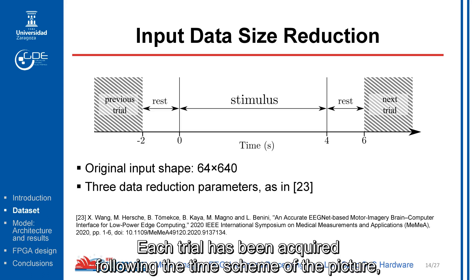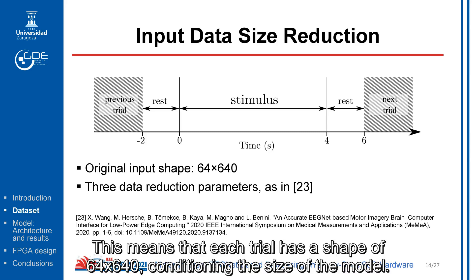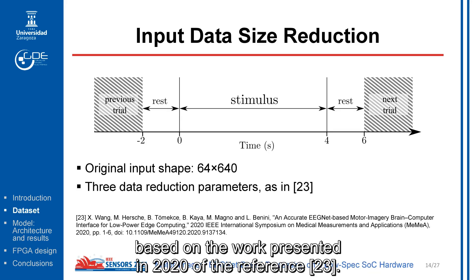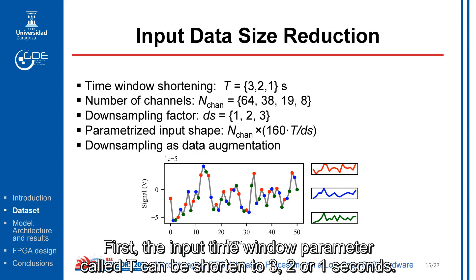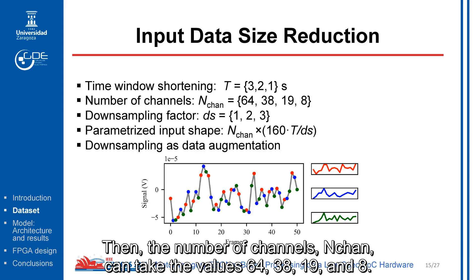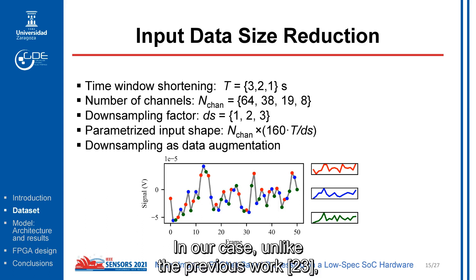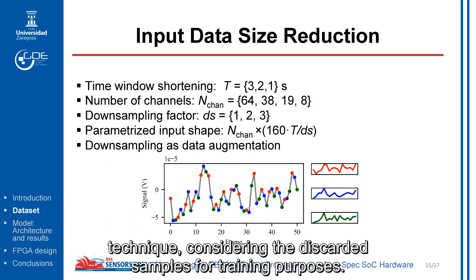Each trial has been acquired following the timing scheme shown in the picture, with the stimulus during four seconds. This means that each trial has a shape of 64 by 640, conditioning the size of the model. Therefore, to address this issue, three data reduction parameters have been introduced, based on the work presented in 2020 in reference 23. First, the input time window parameter T can be shortened to 3, 2, or 1 seconds. Then, the number of channels (N) can take the values 64, 38, 19, and 8. Finally, the downsampling factor can reduce the sampling frequency by 2 or by 3. In our case, unlike the previous work 23, the downsampling factor has been used as a data augmentation technique, considering the discarded samples for training purposes. As shown in the figure, when a sampling stride is selected, a subset of the samples is used to form a new trial.